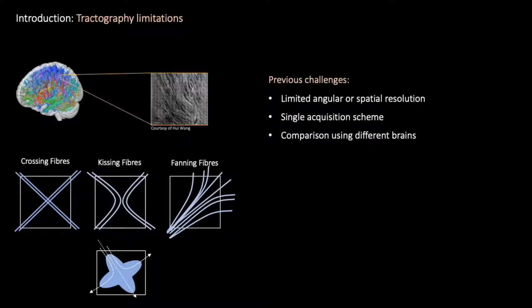Previous validation challenges have addressed the accuracy of tractography techniques and shown its limitations. Prior challenges however use diffusion MRI data that are either limited in spatial resolution or acquired with a single low B value, limiting the number of methods and acquisition schemes to be assessed. Also these challenges often compare ground truth and diffusion MRI in different brains.